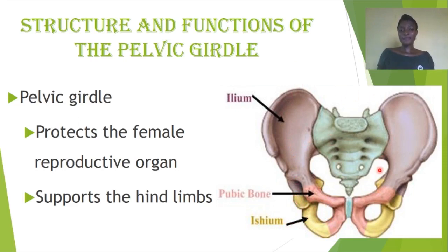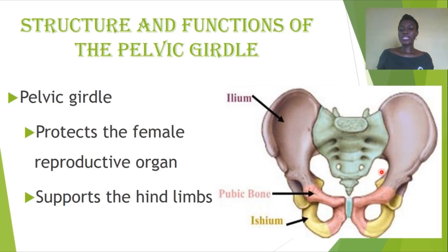These three sets of bones attach to the vertebral column at the lower abdomen and hip region to provide surfaces for muscle attachment. The pelvis is also located close to the reproductive organs, so it helps protect the female reproductive organ, as well as support the hind limbs to allow free movement.